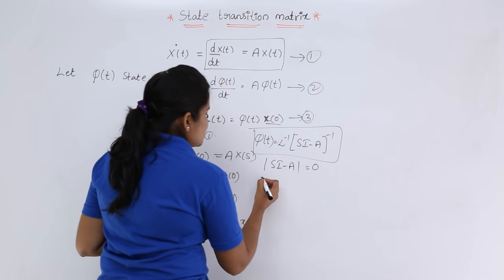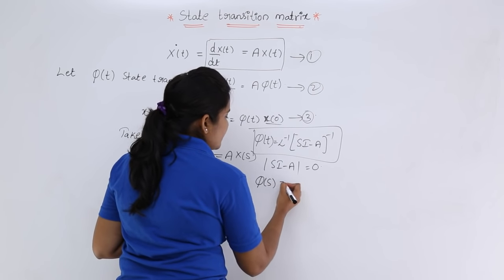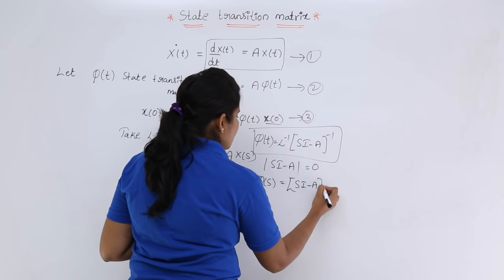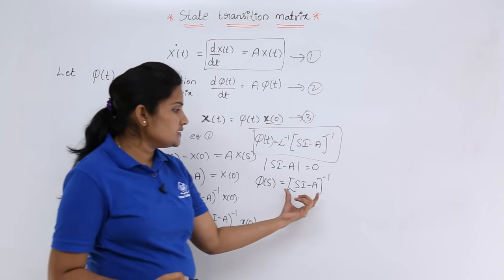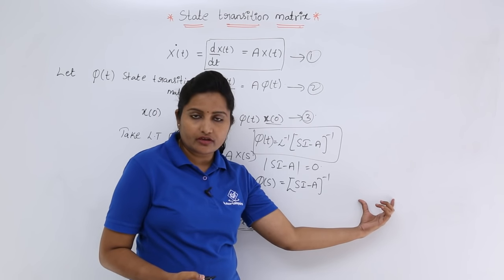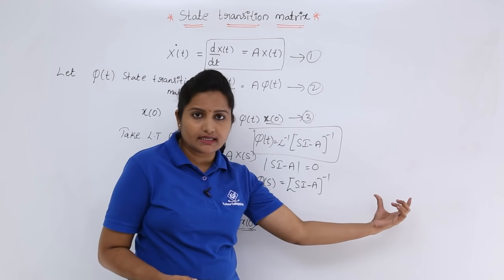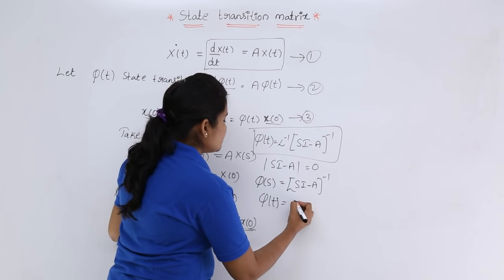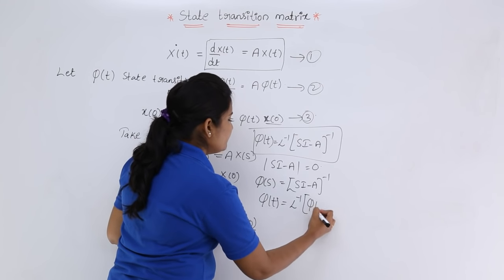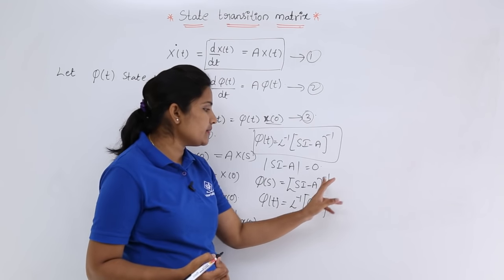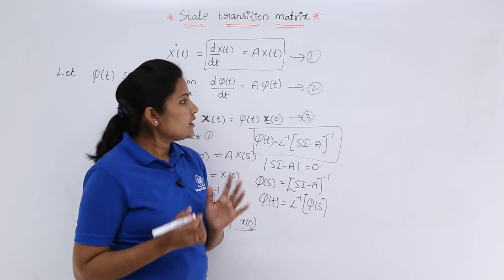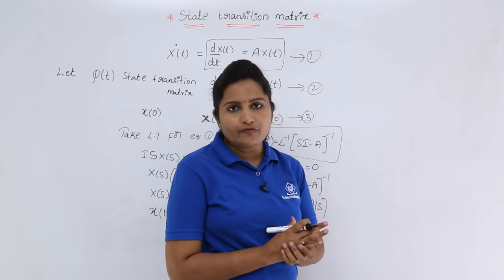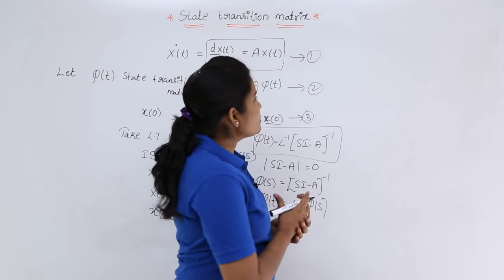In the s-domain, phi(s) = (sI − A)⁻¹ is called the resolvent matrix. The state transition matrix phi(t) is the inverse Laplace transform of phi(s), i.e., phi(t) = L⁻¹{phi(s)} = L⁻¹{(sI − A)⁻¹}.